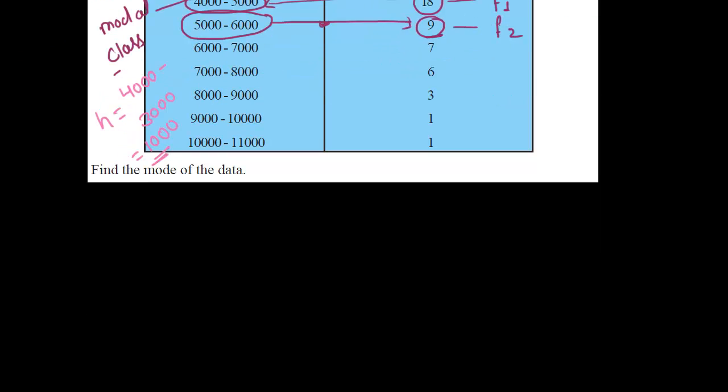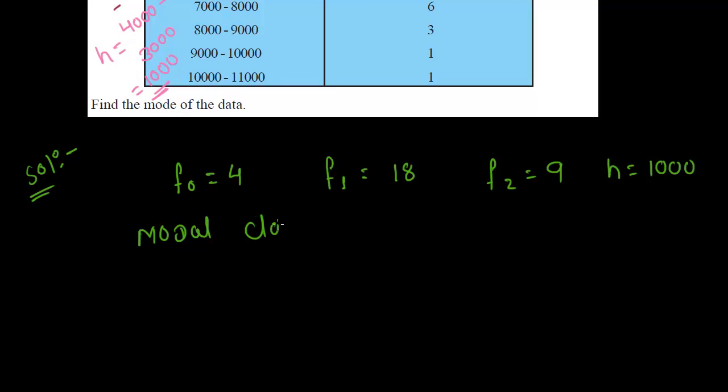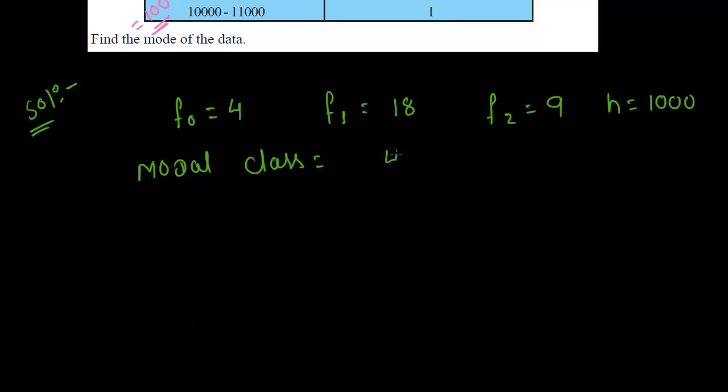Now let's find the solution. F0 is 4, F1 is 18, F2 is 9, H is equal to 1000. Modal class is equal to 4000 to 5000. And L is equal to 4000. Because we know that L is the lower class limit of modal class. Here, lower class limit is 4000, so L is equal to 4000.